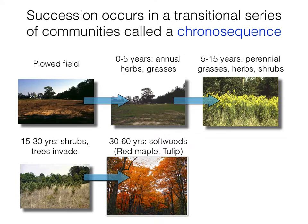Between 30 and 60 years in these abandoned fields on the East Coast, we tend to get smaller softwooded trees like red maple and tulip poplar. These are common early tree species that, when they establish, outshade the shrubs and smaller trees like red cedar. Once they overtop them, they outcompete them and eventually become the dominants in the forest. At this point we start seeing the forest canopy develop, and eventually it will become a closed canopy forest.